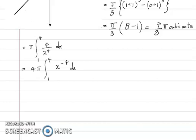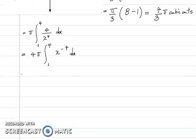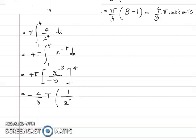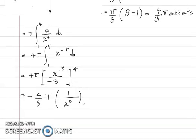Integrating x⁻⁴: increase the power by 1 to get x⁻³, then divide by the new power −3. So we have 4π times [x⁻³/(−3)] from 1 to 4. Pulling out the −3, this becomes −4π/3 times [1/x³] from 1 to 4.